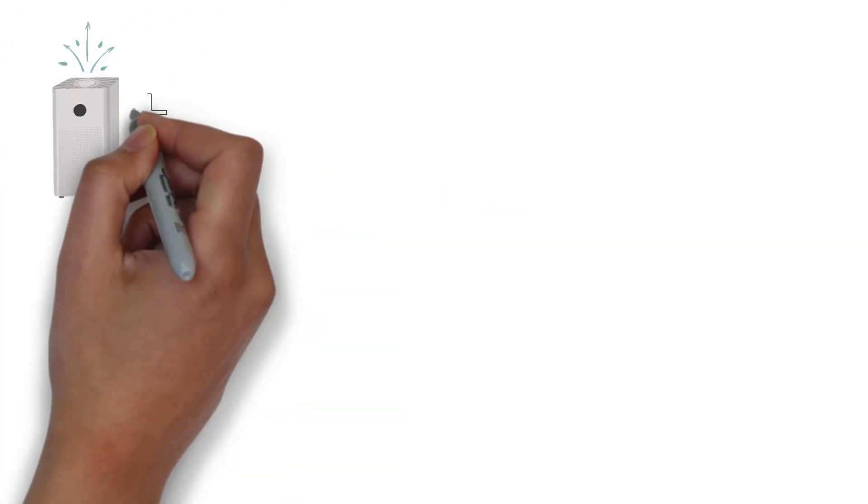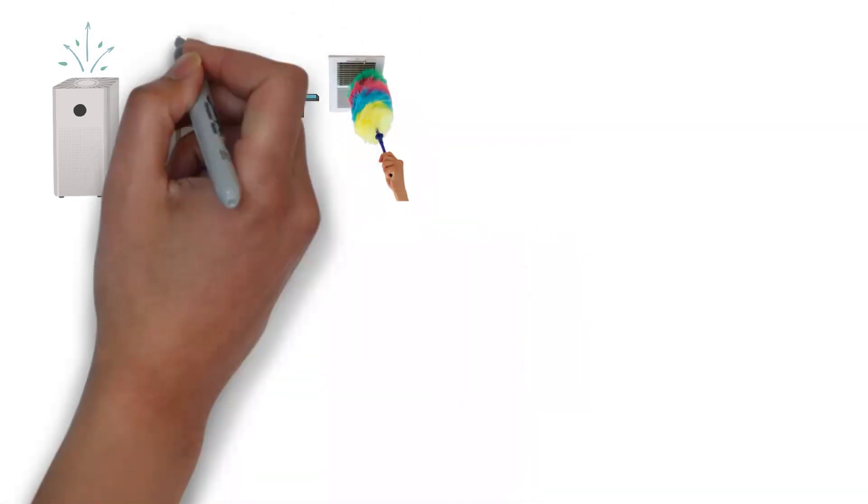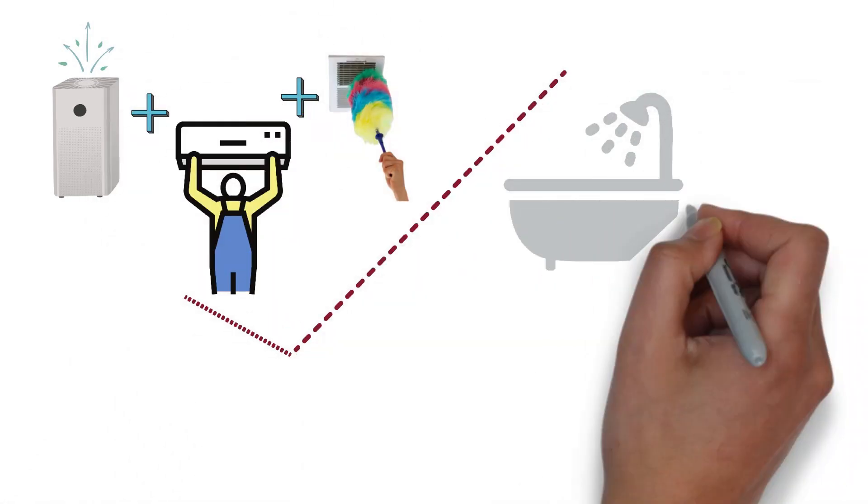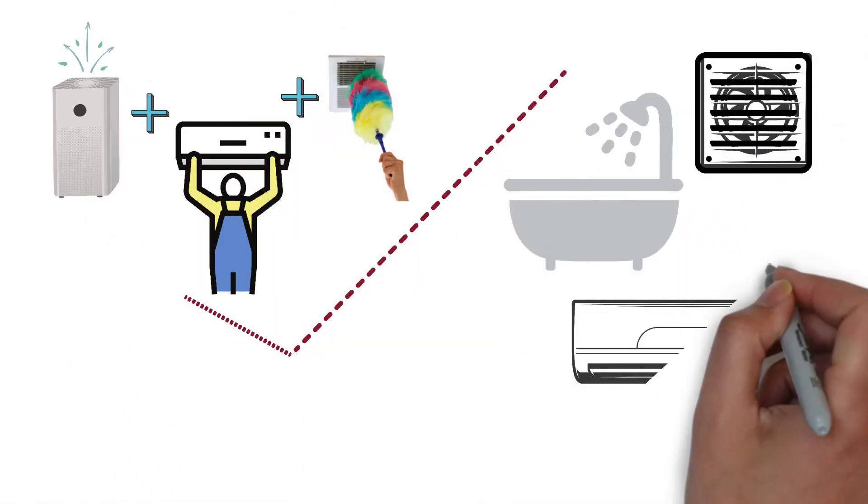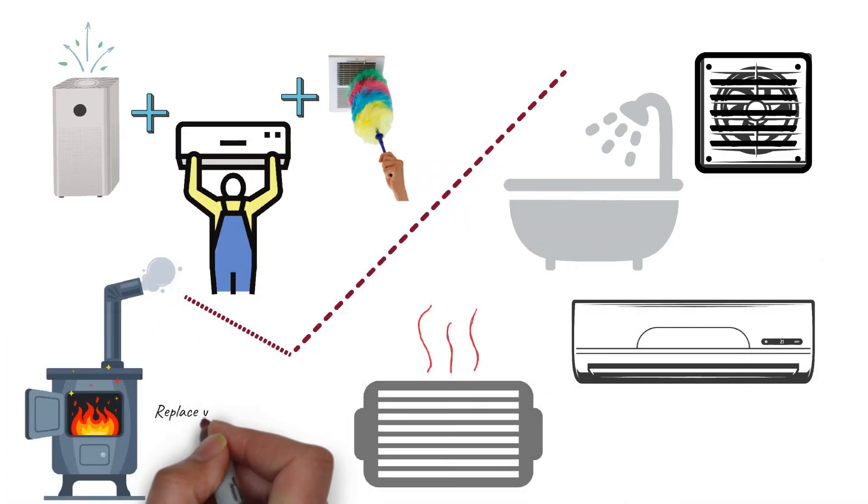Along with getting an air purifier, we should change all of the filters in our home and clear the vents, such as those in the bathroom or our air conditioning or heating vents. It's also important to replace our furnace filters every six months, too.